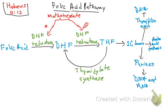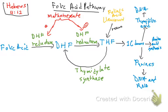So if you block dihydrofolate reductase with methotrexate, you cannot produce DNA, you cannot produce amino acids, you cannot get purines, you cannot get DNA or RNA. But there is something called the rescue. Since methotrexate is blocking dihydrofolate reductase, you cannot get your tetrahydrofolate through the normal route — but you can go directly to tetrahydrofolate using folinic acid. Folinic acid is also known as leucovorin. Then you can continue your normal pathway.